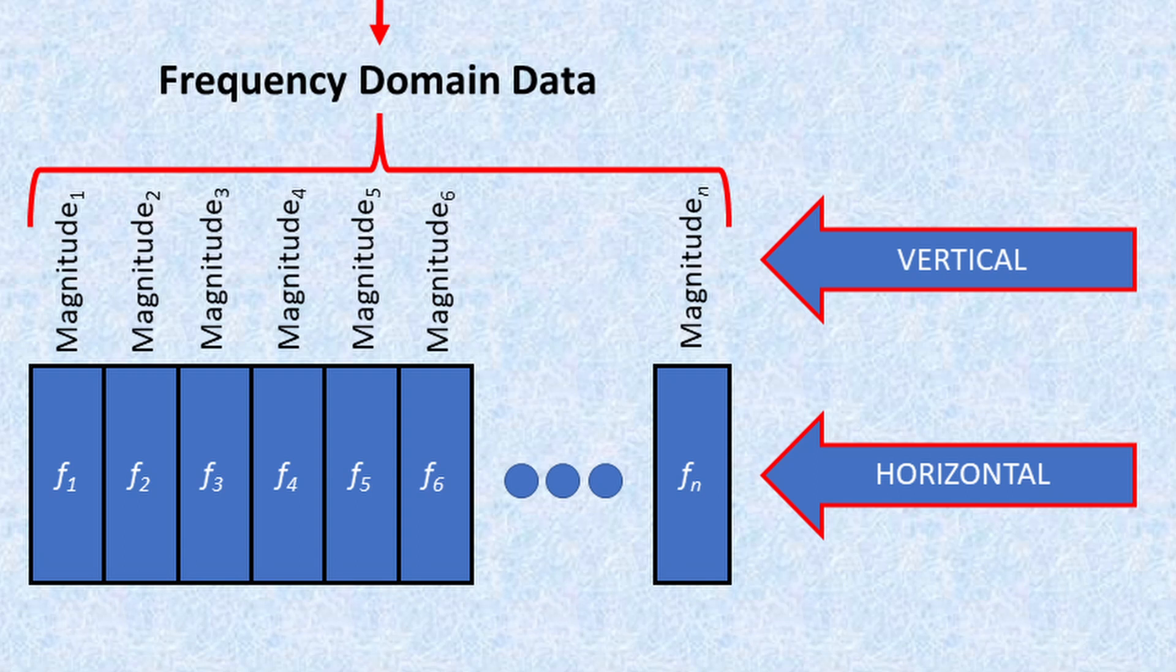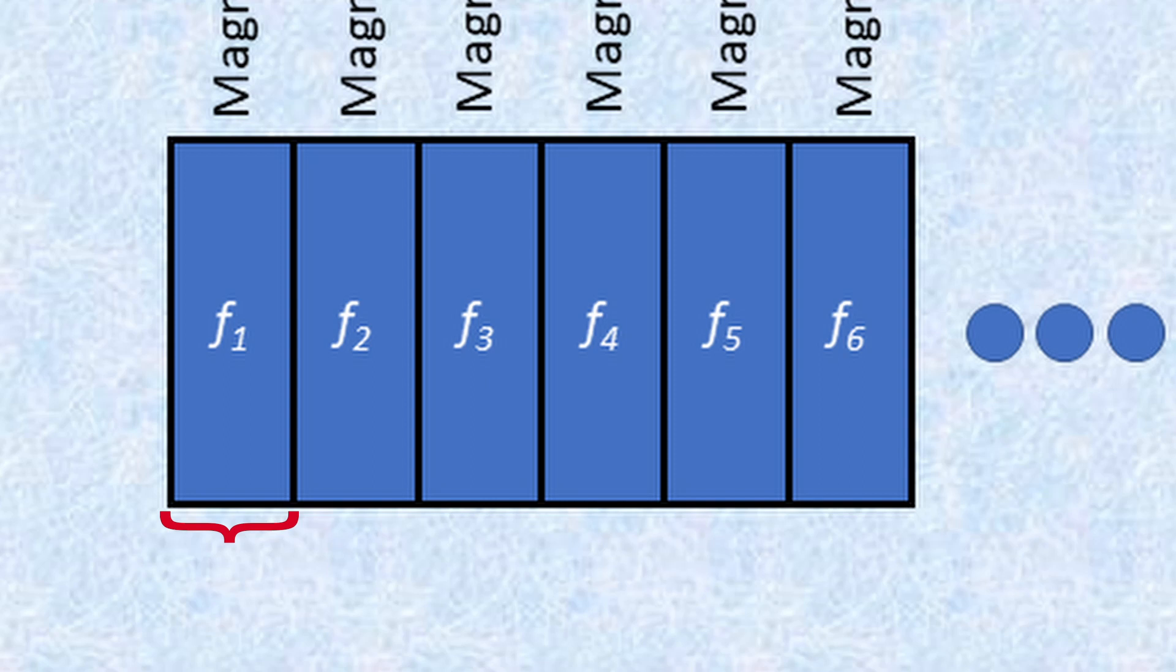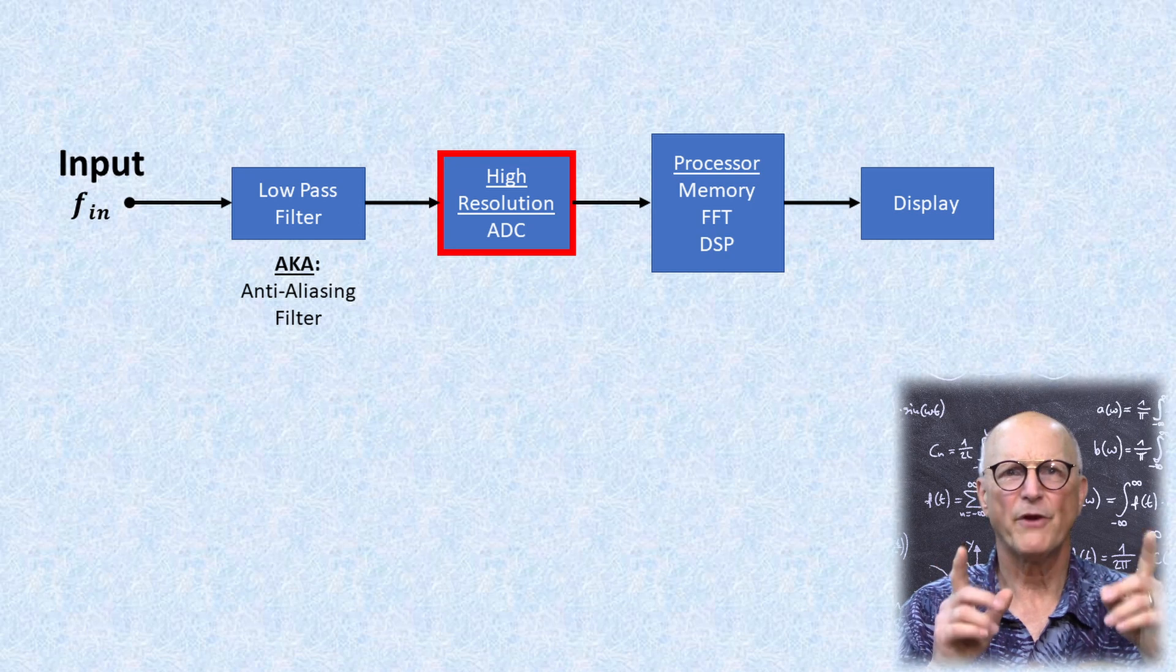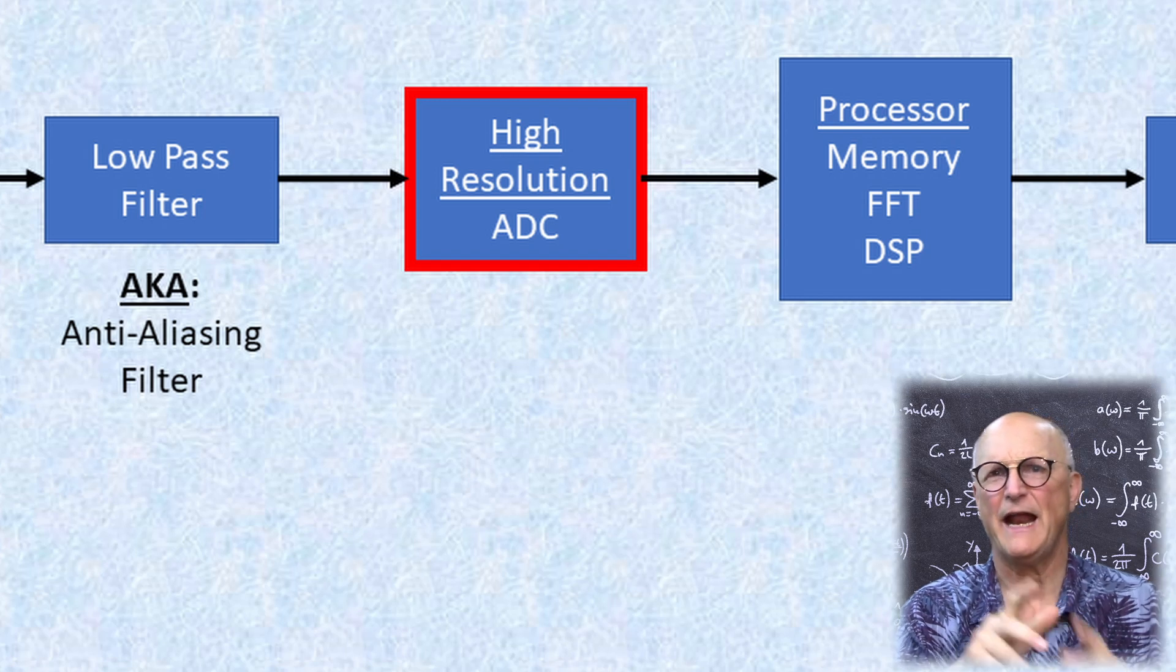The software does some number crunching and then draws a smooth line between each of these data points to produce the completed display. The width of each of these bins determines the frequency accuracy and resolution of the analyzer. It also affects the accuracy of the reported amplitude.